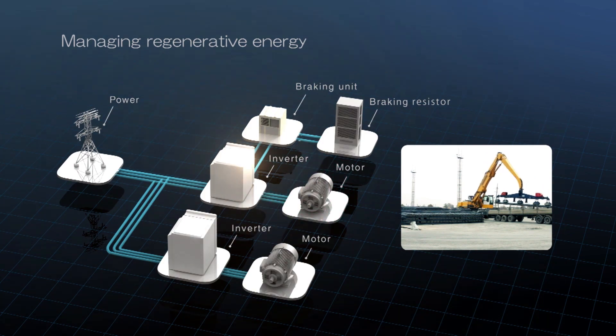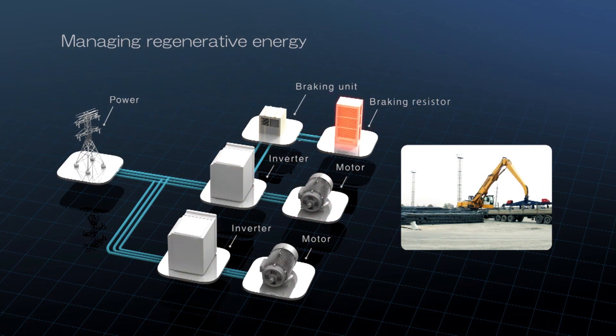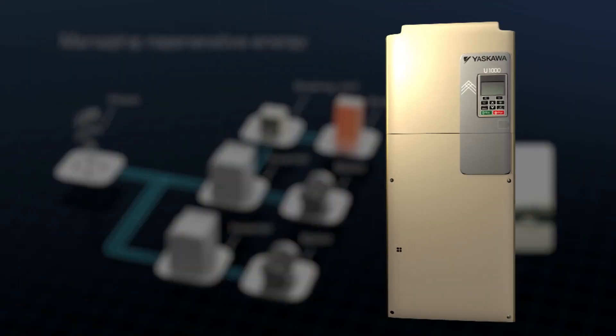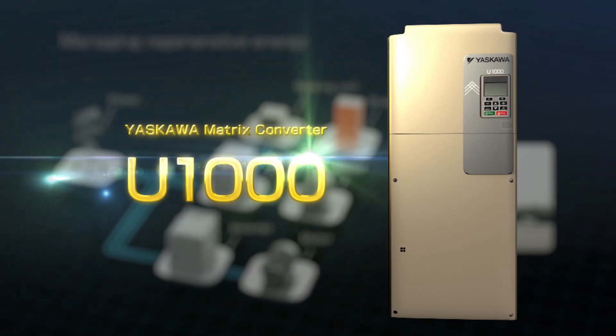The Yaskawa Matrix converter U-1000 works differently by delivering energy back to the power source instead of wasting it.